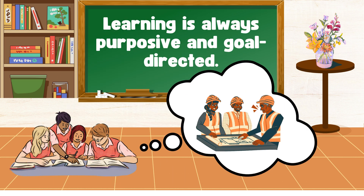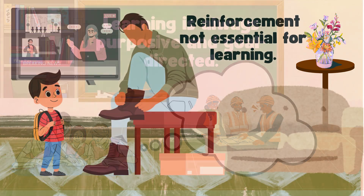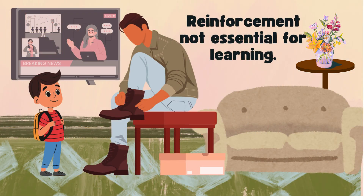Learning is always purposive and goal-directed because individuals acquire knowledge and skills with a specific intention or objective in mind, whether it's to solve a problem, achieve a goal, or adapt to a situation. Learning can also occur without reinforcement through observation, experience, and insight. For example, a child who watches their older sibling tie shoelaces eventually does it on their own without direct teaching or rewards.